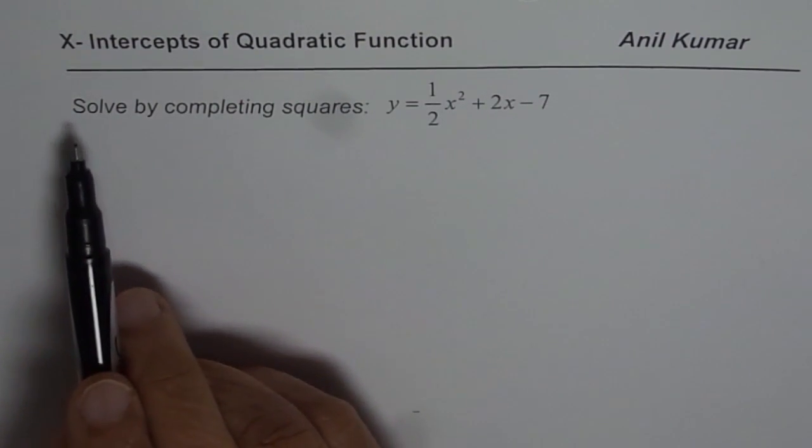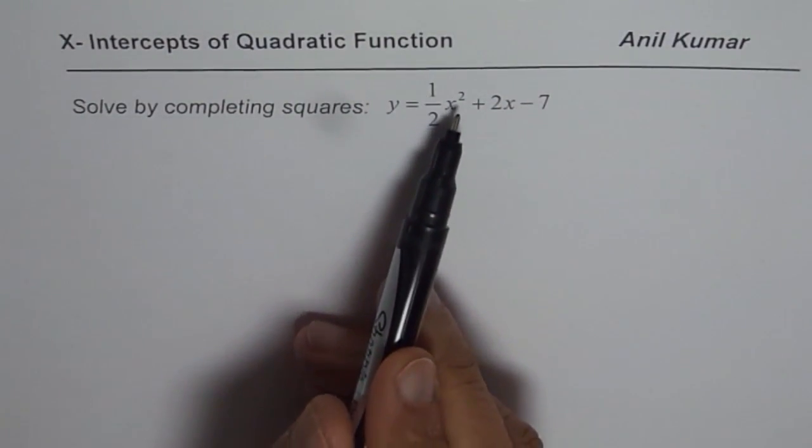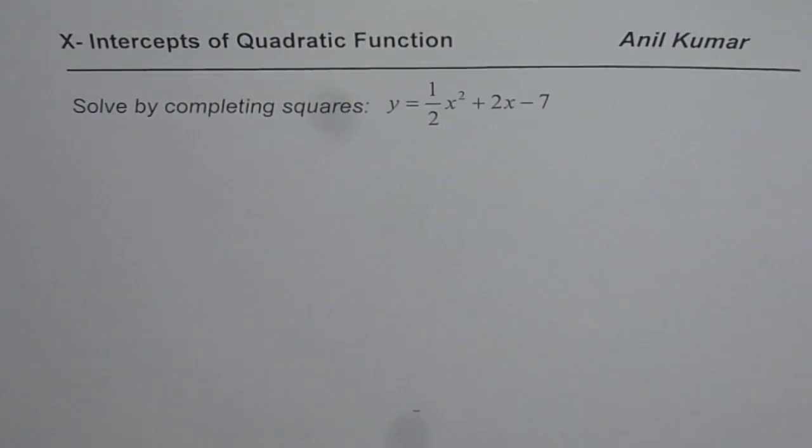Question is, solve by completing squares: y equals half of x squared plus 2x minus 7.